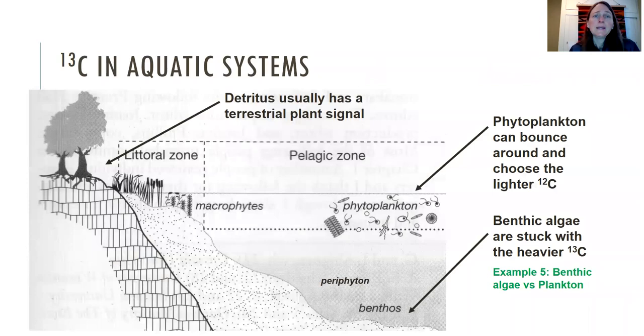In aquatic systems it's a little bit more complicated because we're not talking about plants, right, but we're talking about algae. Sometimes we're talking about detritus, so the detritus that comes into an aquatic system typically has a terrestrial plant signature.